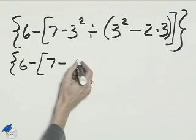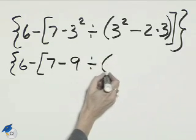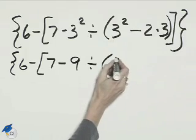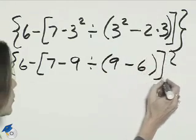7 minus, here we can multiply 3 times 3 and get 9, divided by, inside the parentheses here will be 9 minus 6, close the bracket and the brace.